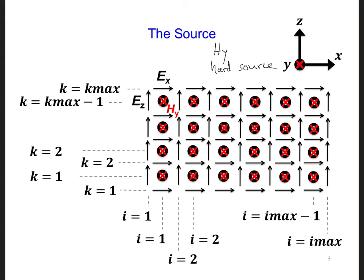The reason we should put the source on an H_y component is because it's symmetrical in the x and z directions, and so it should radiate equally in all directions in the x and z directions.